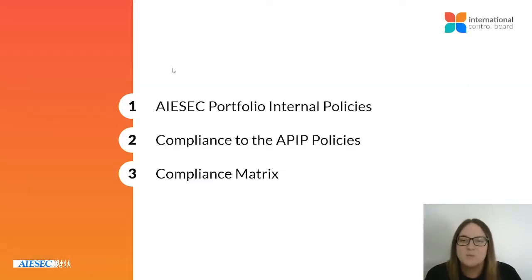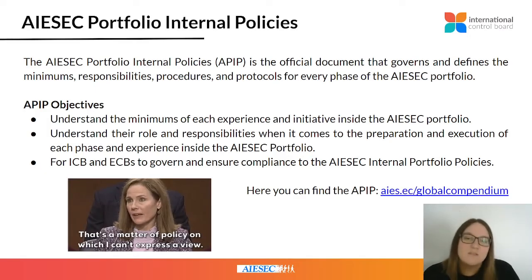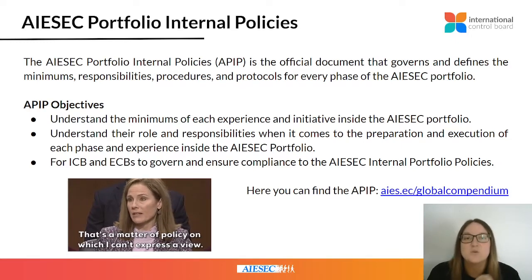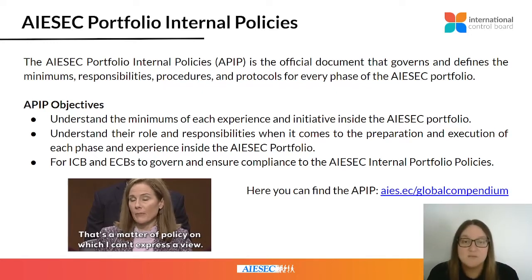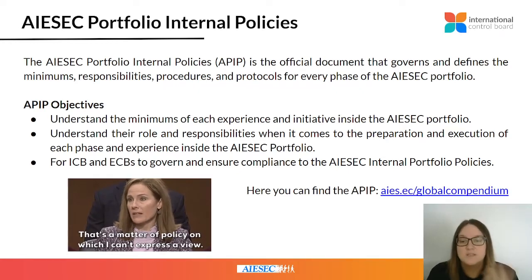So we have the APIP, we have the compliance to the APIP policies, and the compliance matrix. The APIP is the official document that has all of the minimums, all of the responsibilities — what each member of ISAC needs to do to ensure that we're delivering the best experience possible, that is a leadership experience. The objective is that we have the minimums of each experience, the roles and responsibilities for execution, and that ICB and ECB are governing the APIP.